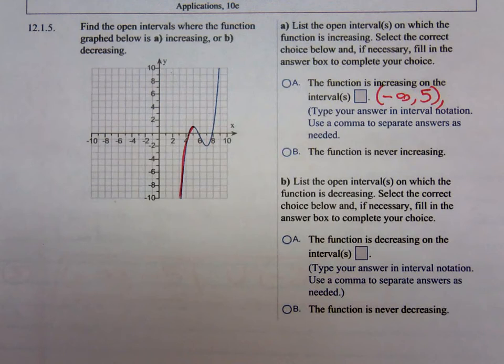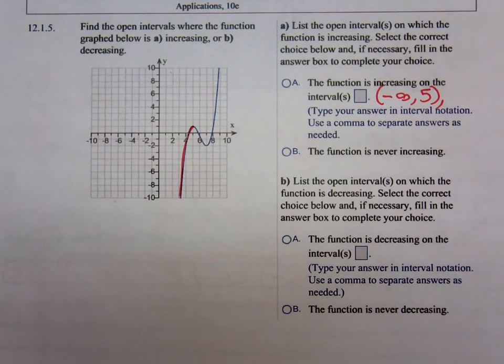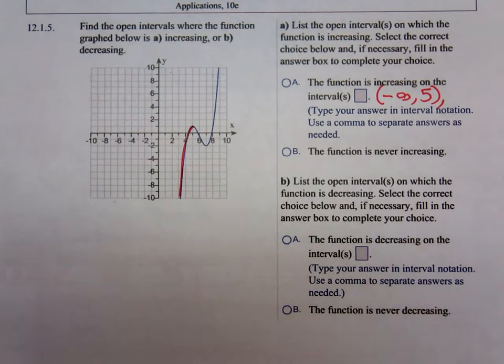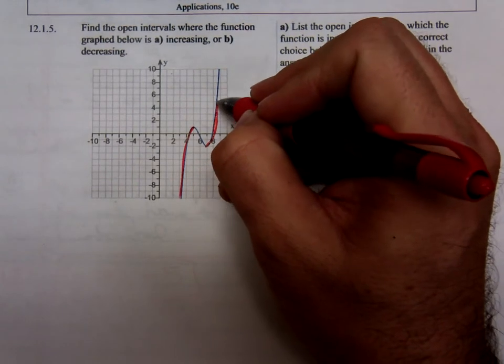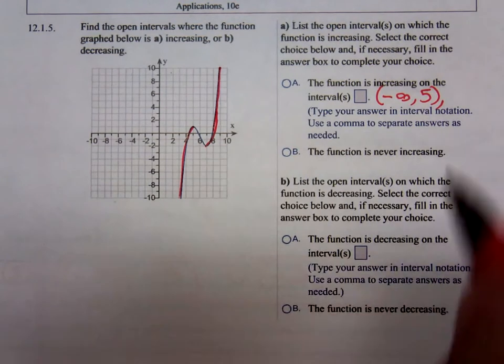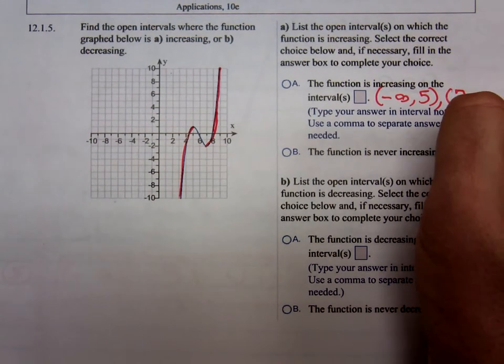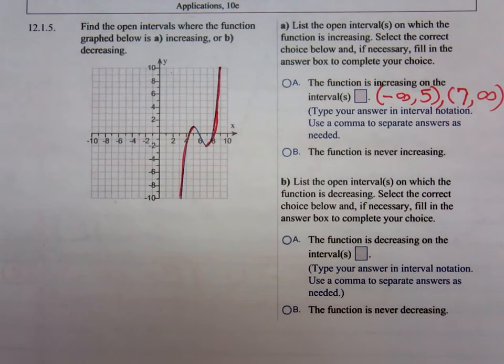There's another time that it starts to increase. Where does it start back increasing? What number on the x-axis? 7, I agree, right there. So we're looking at this portion of the graph. So it starts back increasing at 7, and it keeps on increasing from 7 to infinity.